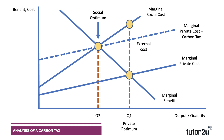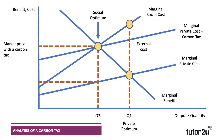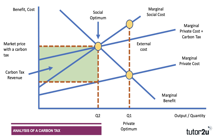A carbon tax aims to make the polluter pay. What a carbon tax does is increase the marginal private cost of supply — I've shifted the marginal private cost curve up, so it's MPC plus the tax. In theory, if you get the tax right, that takes output back to the social equilibrium output, and the market price under the carbon tax would be higher than it would be if you left the market to decide. And you will get some tax revenue: that vertical distance is the tax per unit, and multiplying by quantity Q2 gives you the carbon tax revenues. There's a neat diagram showing the possible effects of a carbon tax.